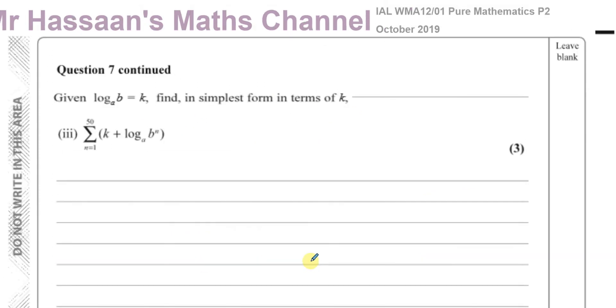Now part 3 says given log to the base A of B equals K, same thing. So it's the same thing, but here we have this, finding the simplest form in terms of K. This is a sigma notation, this is to do with series. This is telling us to find the sum of this whole expression in here when you replace N with 1, and then replace N with 2, and then with 3, add all those terms together until you get to the 50th term. So before we start, I'm going to take this K plus log to the base A of B to the N and I'm going to simplify it. I'm going to simplify this first, and then I'm going to put it back in there.